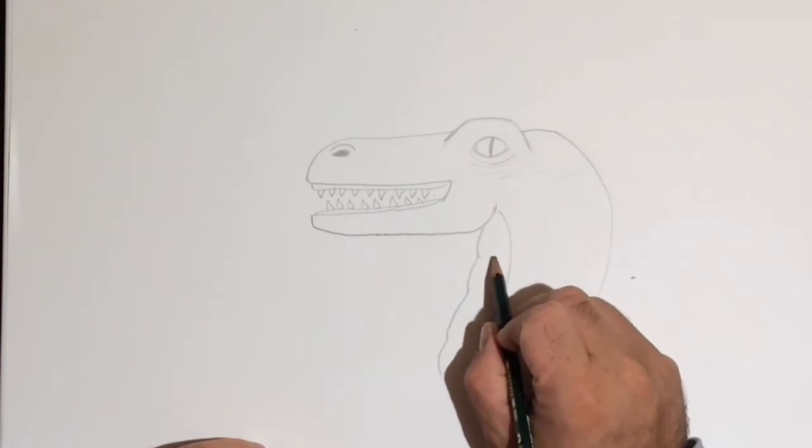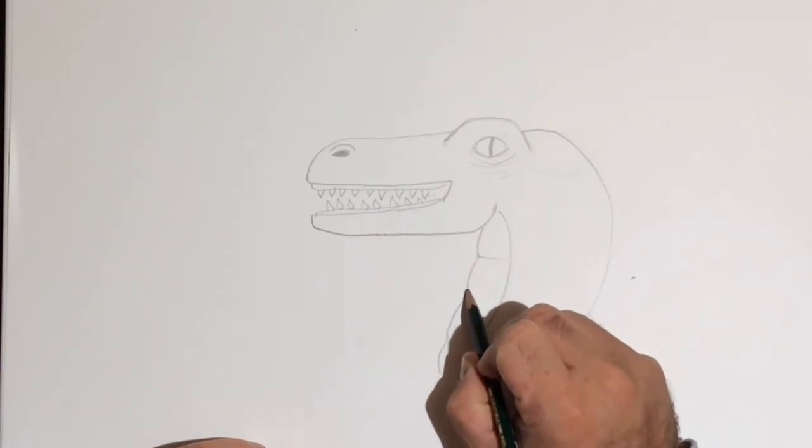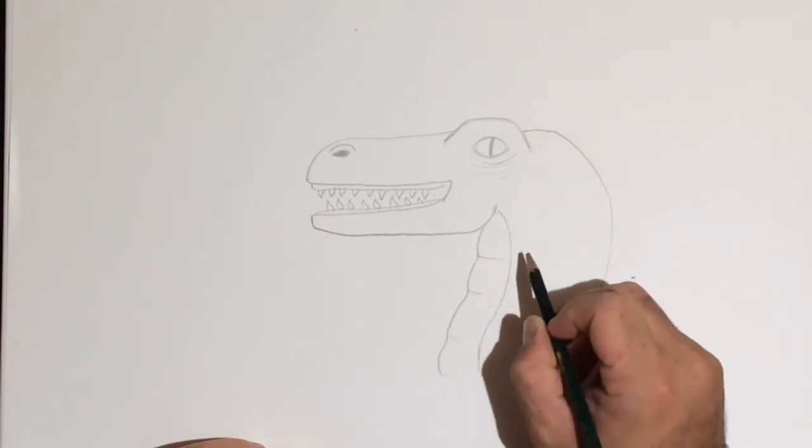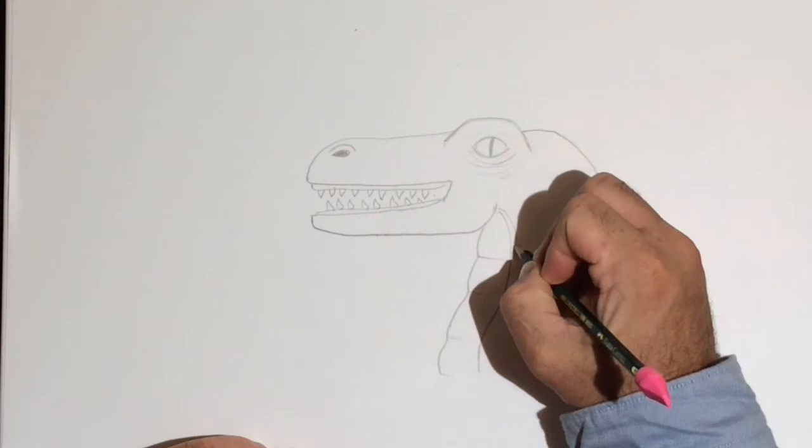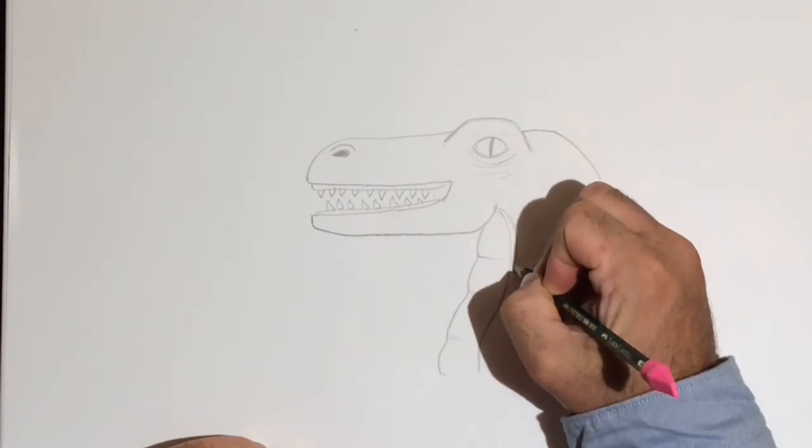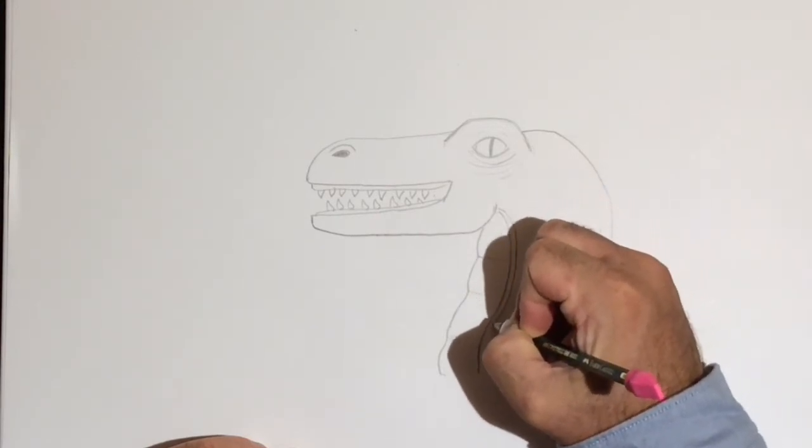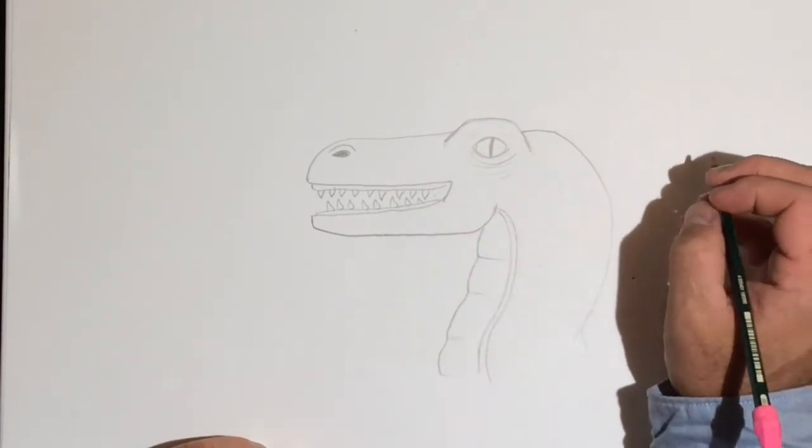Anyway, let's start adding the details here. Put some lines. And I'm going to double this line up a little bit, so I'm just going to redraw it right next to it.